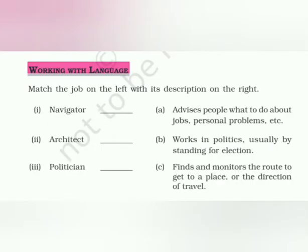Before I move ahead I would like to complete the Working with Language on page 76. This is 'Match the job on the left with its description on the right.' On the left we have the job designation and on the right we have the description — what these people do. I am showing an example of only these three: navigator, architect, politician. Navigator is answer number C — description number C: 'Finds and monitors the route to get to a place, or the direction of travel.'